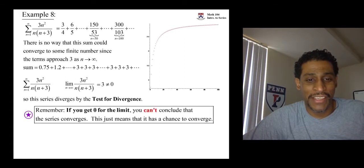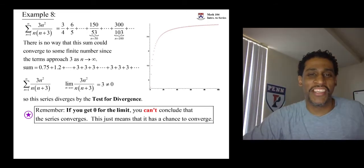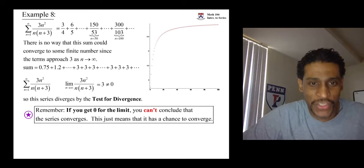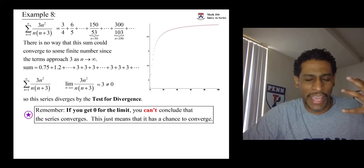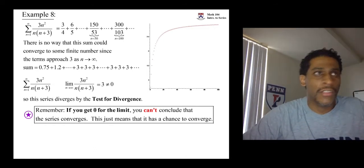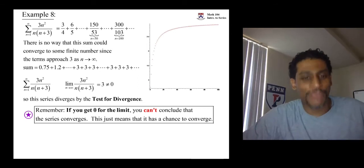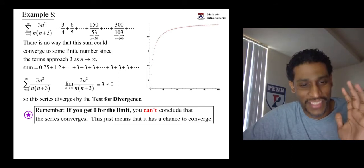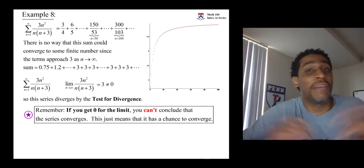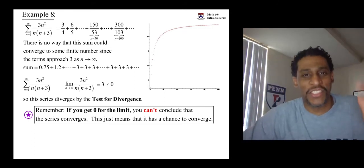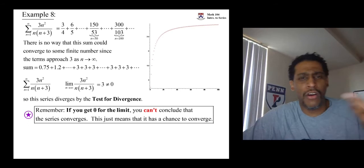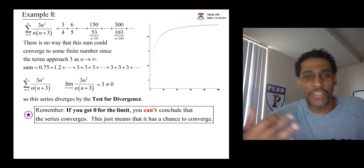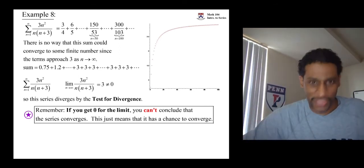I really want to be clear: don't repeat the mistake of confusing the converse with the truth. If your limit is zero, you cannot conclude the series is convergent — it means it has a chance to converge, but that's all. Don't fall into that trap: if you take the limit and get zero, you've just wasted your time. If you don't get zero, that's saying something.